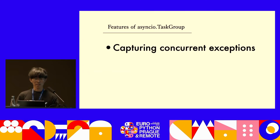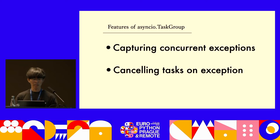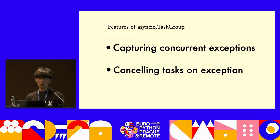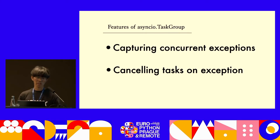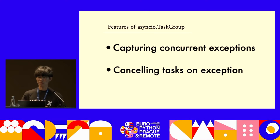Task Group has two major features: one, capturing concurrent exceptions; and two, canceling tasks when an exception occurs. This API greatly improves dealing with exceptions and cancellations.